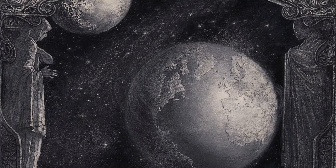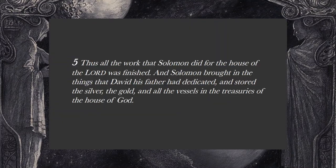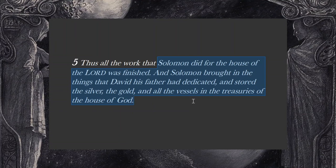The end of this unit, chapter 5 verse 1, has some interesting language. It reads: 'Thus all the work that Solomon did for the house of the Lord was finished. And Solomon brought in the things that David his father had dedicated and stored — the silver, the gold, and all the vessels and the treasuries of the house of God.' Of interest here is this language of 'work' as well as the term translated 'made.' In English it might not seem significant, but it actually is, because this language mirrors Genesis 2, verses 2 and 3.